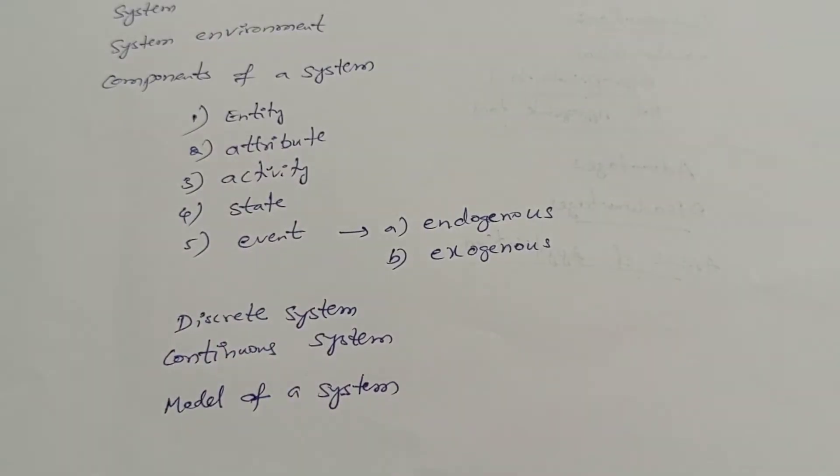Coming to discrete systems. A discrete system is one in which the state variables change only at a discrete set of points in time. These variables are changing only at discrete time points.